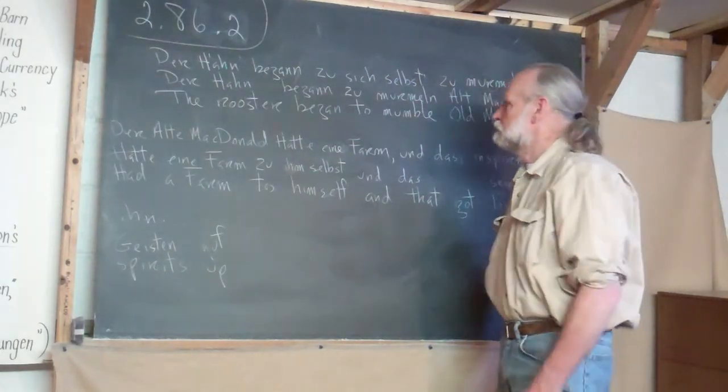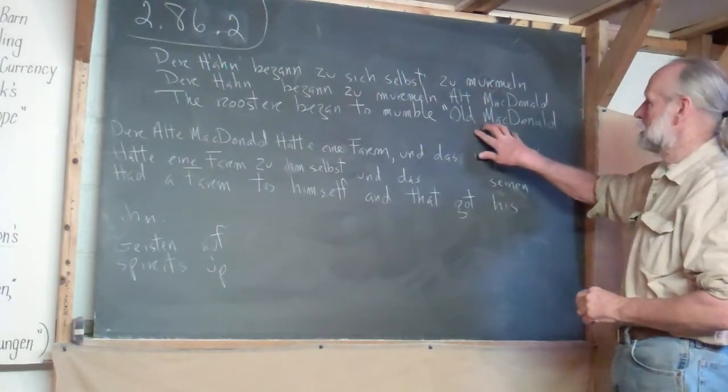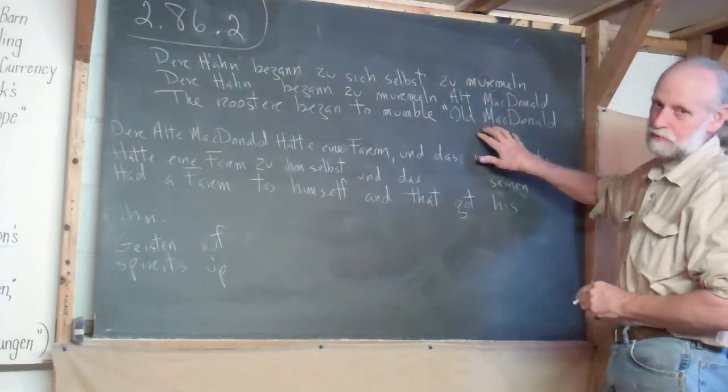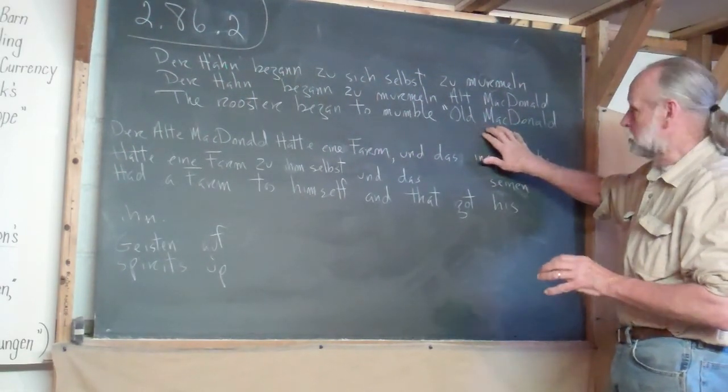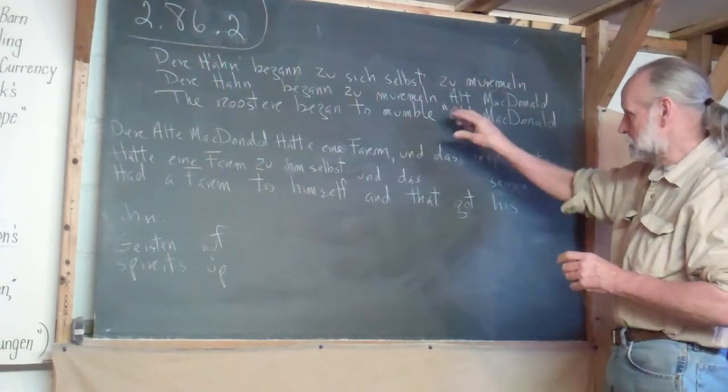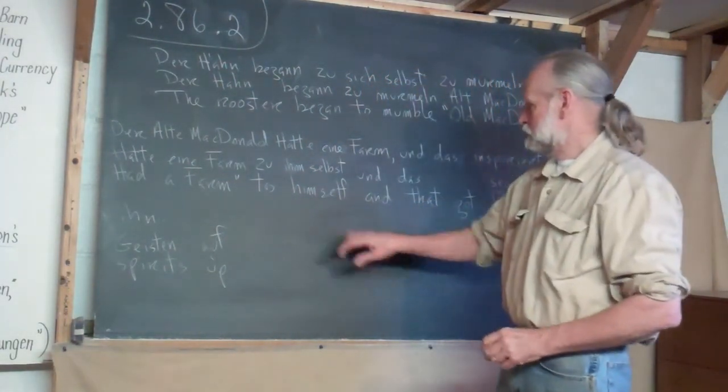Okay, the rooster began to mumble. We have to open quotes, because this is the name of something short. It's the name of a song, or if it were a poem. Something short, well then you use quotation marks. Old MacDonald had a farm, there it is, to himself.